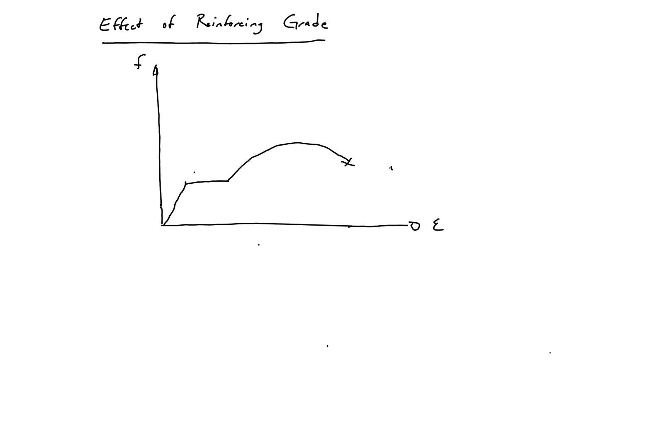So this curve is typically the behavior you'll get if you test a grade 40, or where the yield strength is 40 KSI steel. What happens is as you increase your steel strength, your yield plateau will shorten, your yield strength is obviously going to increase.